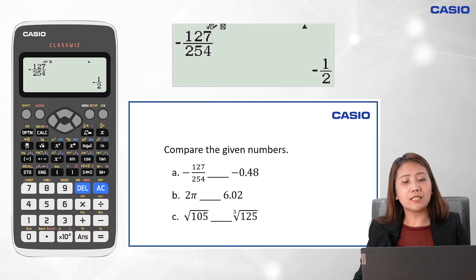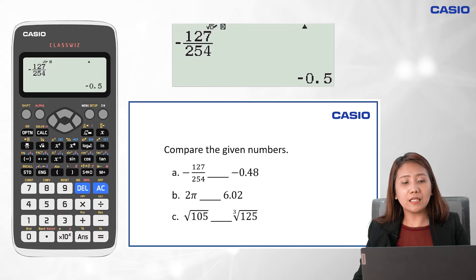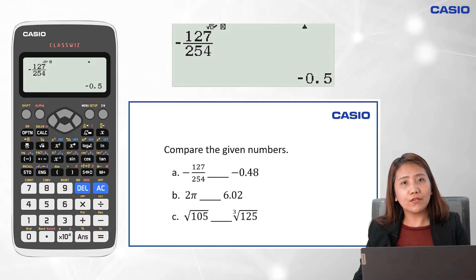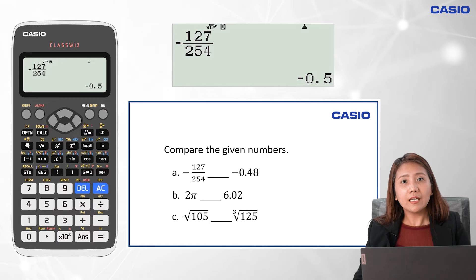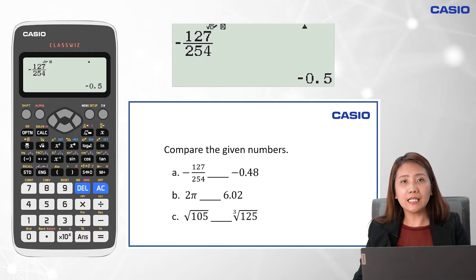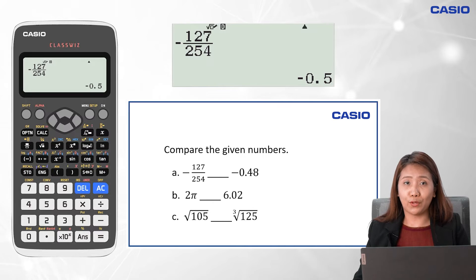Let's press the equal sign. That's equivalent to negative one-half, and in decimal it's equal to negative 0.5. Comparing it with negative 0.48, we have negative 0.5 is less than negative 0.48. Therefore, negative 127 over 254 is less than negative 0.48.